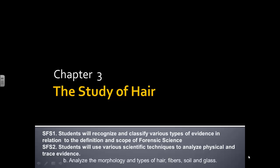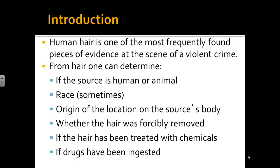Hi, in this video we are going to be talking about hair evidence. Human hair is one of the most frequently found pieces of evidence at a crime scene, usually in violent crimes when people are flailing around and hair will fall out.